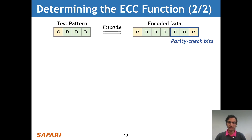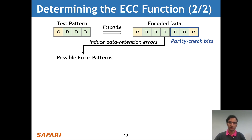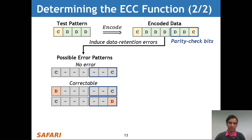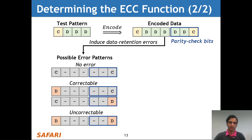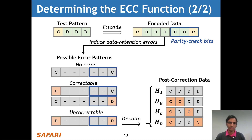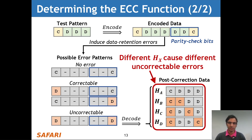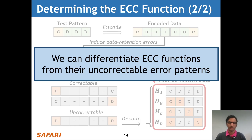Let's take a look at what happens when we induce data retention errors. Suppose we start with the same test pattern, but we know that the ECC function sets precisely one parity check bit to the charged state. When we induce data retention errors, there are several different pre-correction error patterns that might occur — no error, a correctable error where a single charged bit flips, or an uncorrectable error where both charged bits flip. Depending on the particular ECC function, the ECC decoder might produce any of four possible different data patterns. This means that different H matrices cause different uncorrectable error patterns, and we can differentiate different ECC functions based on their uncorrectable error patterns.